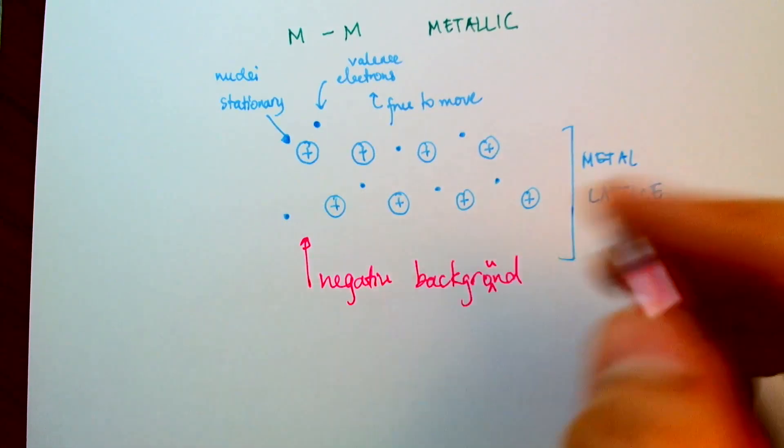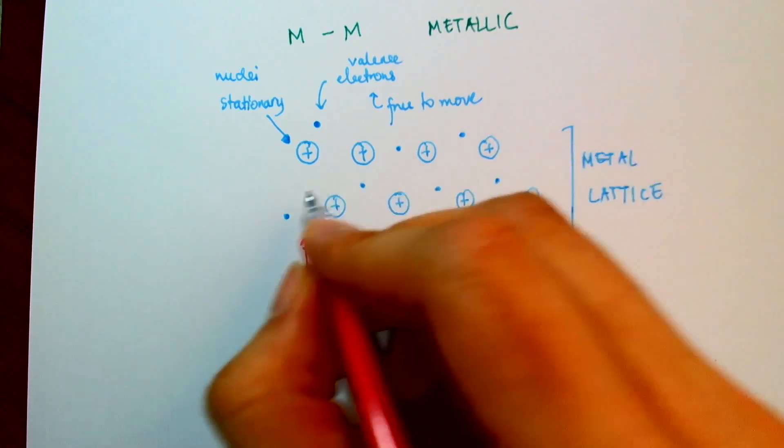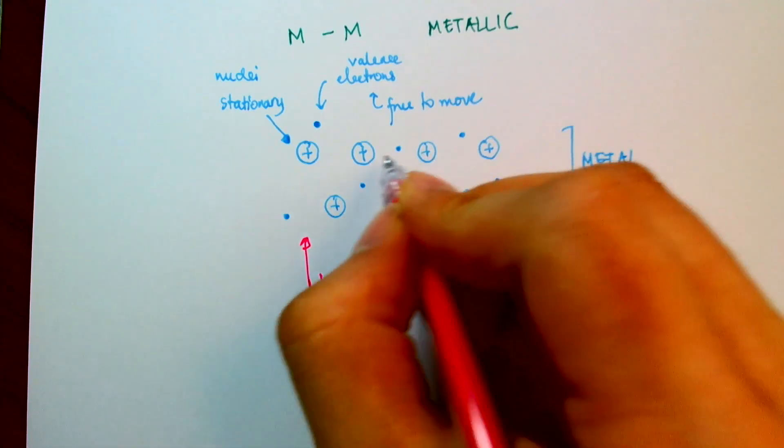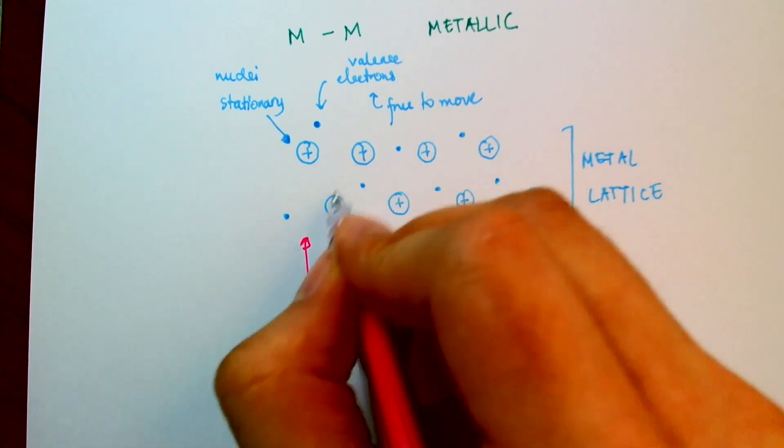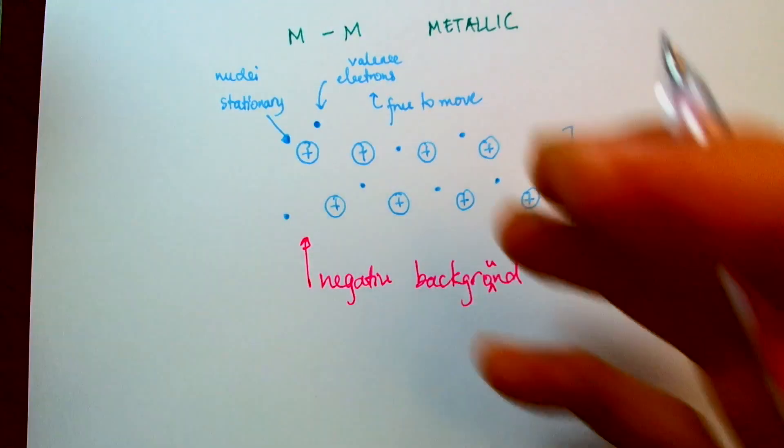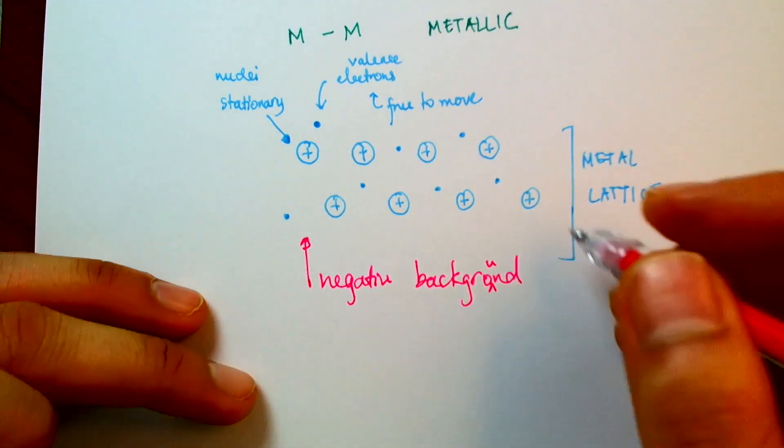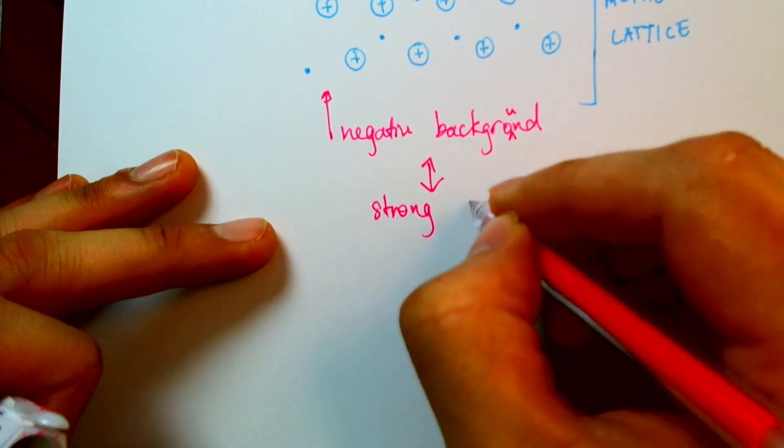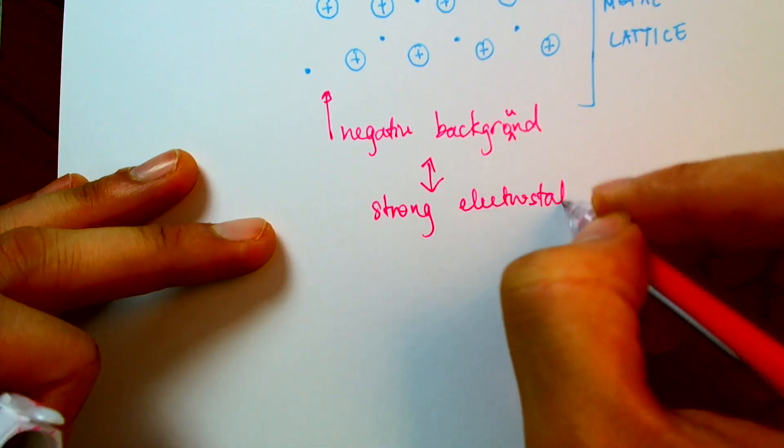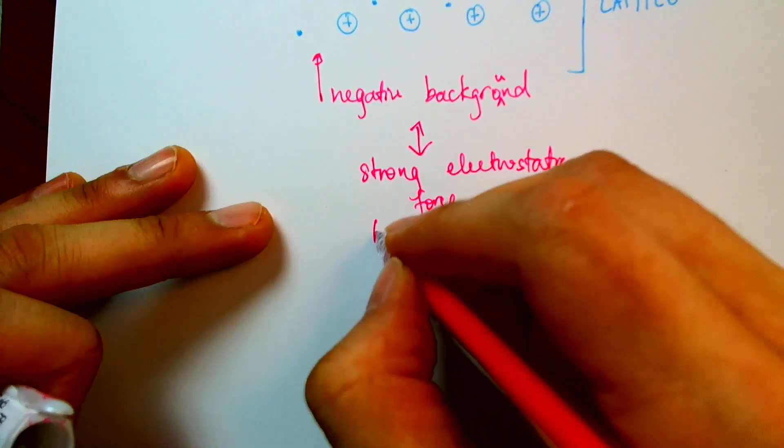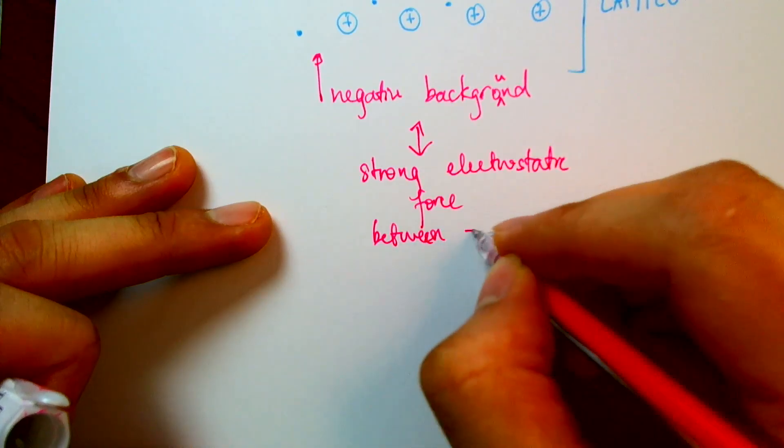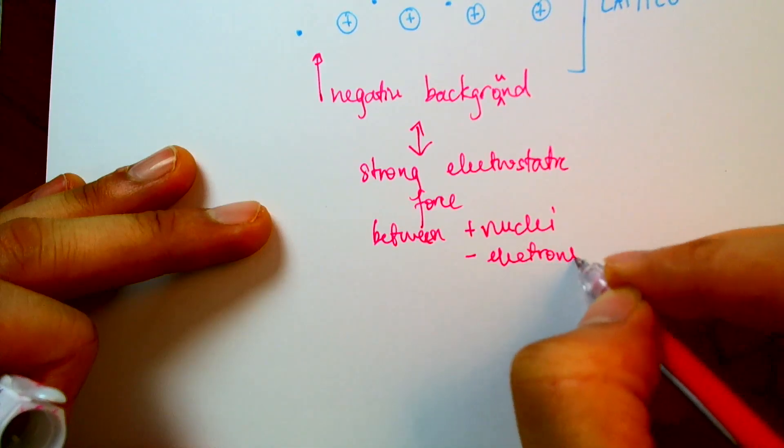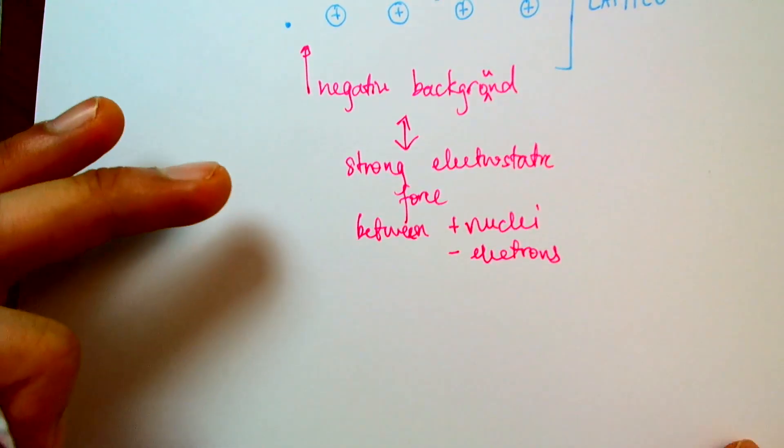So since the positives attract the negatives, for example, this electron is attracting both of these nuclei. And this electron is attracting these three nuclei. So they are all mutually attractive, and this creates a really strong electrostatic force between them. So you have a strong electrostatic force between the positive nuclei and negative electrons. So that's what a metallic bond looks like.